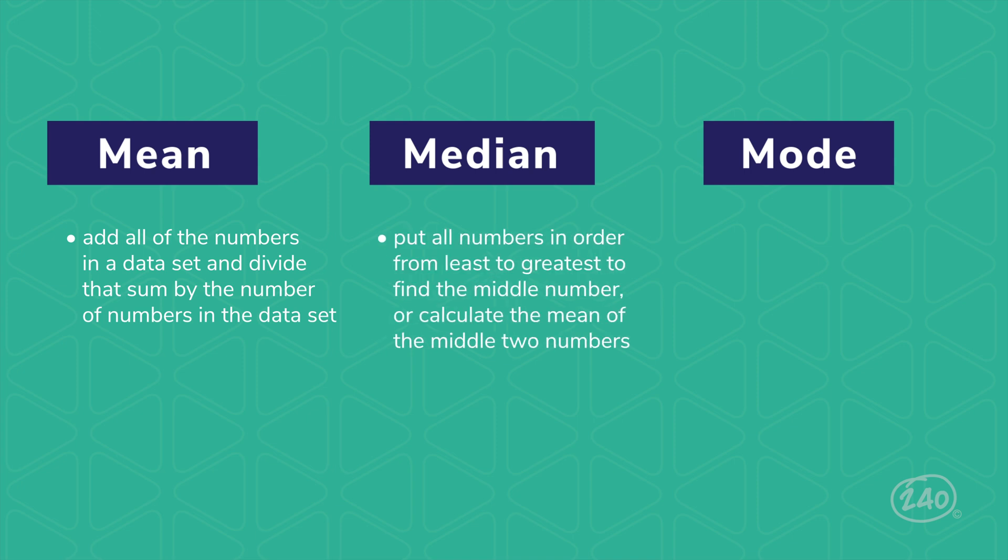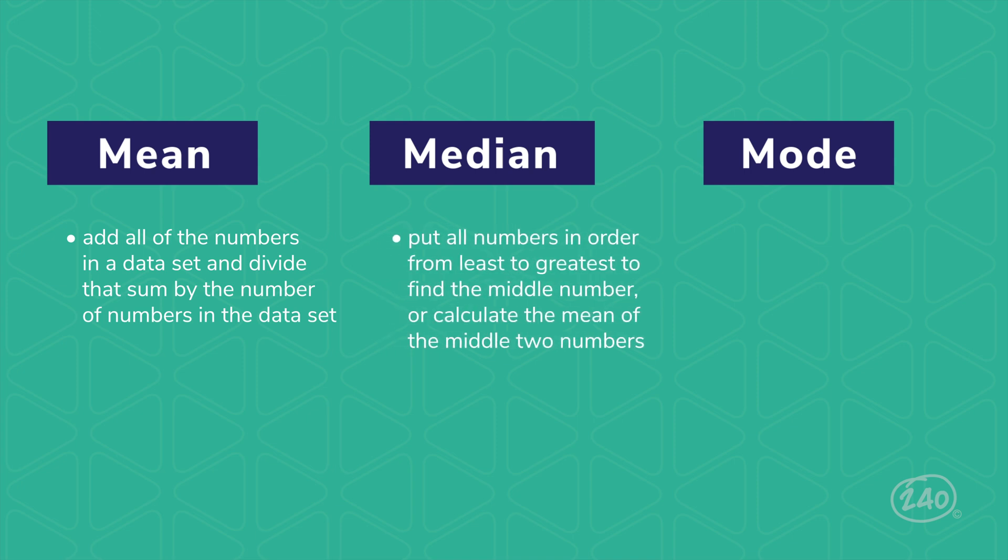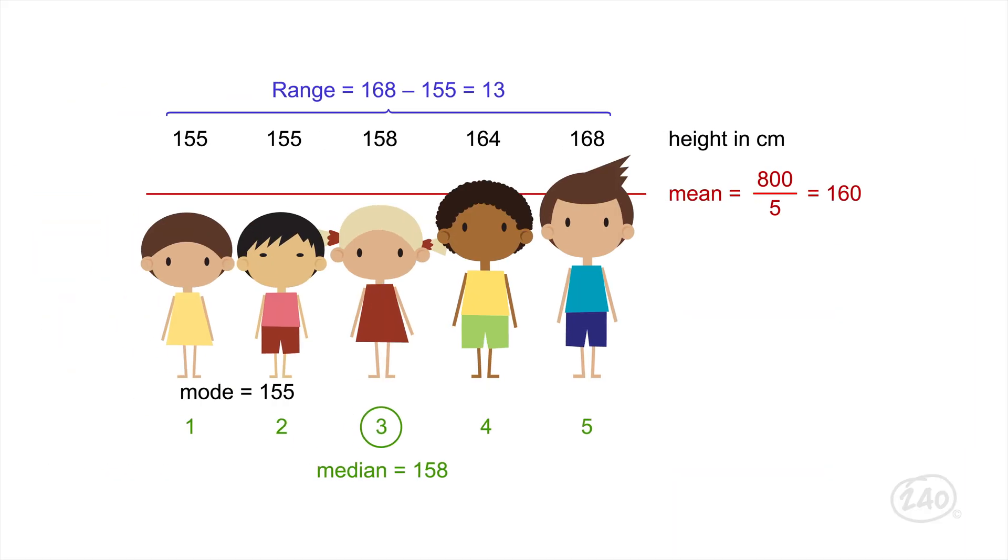To find the median, first put all of the numbers in order from least to greatest. The median is either the middle number, or if there is an even number of values, found by calculating the mean of the middle two numbers. The mode is the most frequent number in the dataset. Some sets of data have no mode, and some sets of data have more than one mode. Take a look at an example.